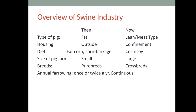Before, the size of pig farms was very small, but now we have very large swine production facilities. Before, swine breeds were purebreds only; now we have crossbreds, which have hybrid vigor, which is very good for meat production. Annual farrowing of sows before was only once or twice a year, but now it is continuous as long as you take good care of your sows.